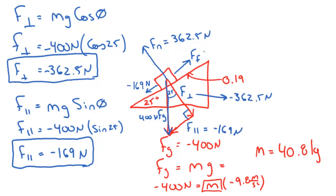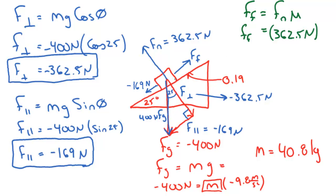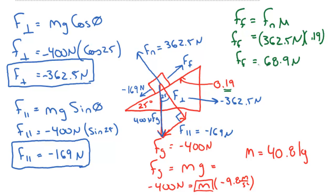Next we solve for the force of friction, which equals the normal force times the coefficient of friction. The normal force was 362.5 Newtons multiplied by the coefficient of friction of 0.19. Crunching those numbers, the force of friction is 68.9 Newtons.